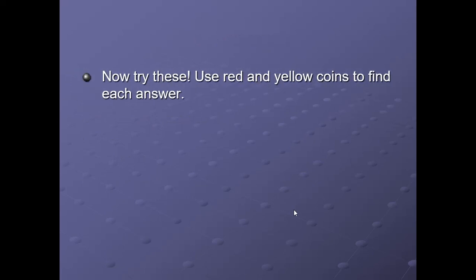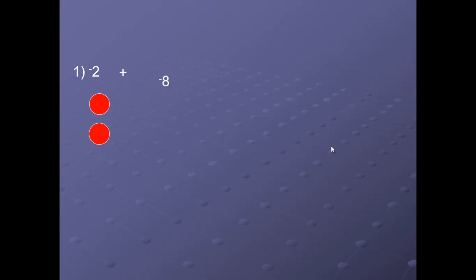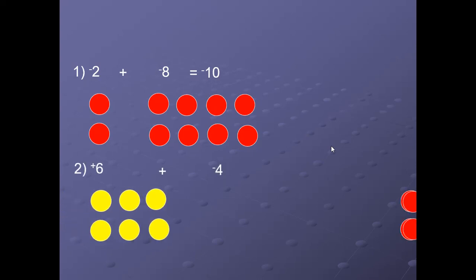Now try these. Use red and yellow coins to find each answer using the previous and present videos. The problems include: minus 2 plus minus 8; 6 plus minus 4; minus 5 minus plus 4; minus 6 minus minus 7. Minus 2 + (−8) = minus 10. For 6 + (−4): 4 pairs of zeros cancel out, giving plus 2.